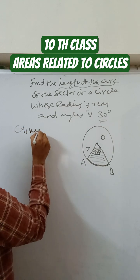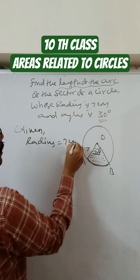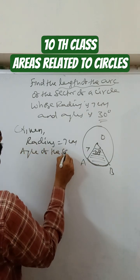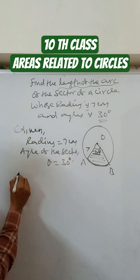So given: radius is equal to 7 centimeters, angle of the sector theta is equal to 30 degrees.